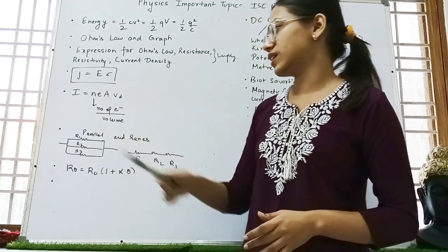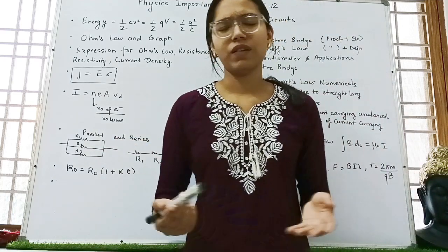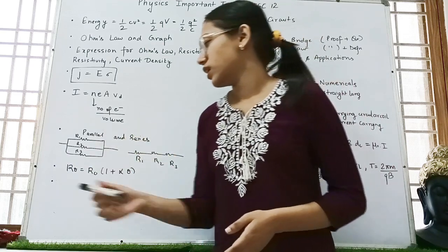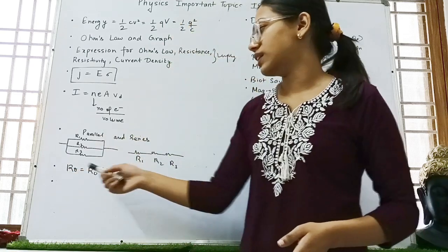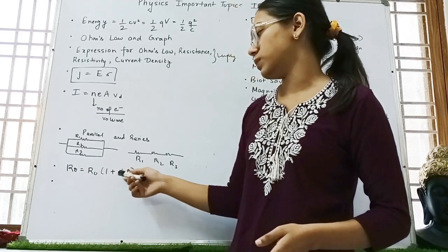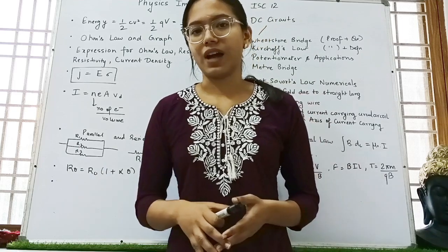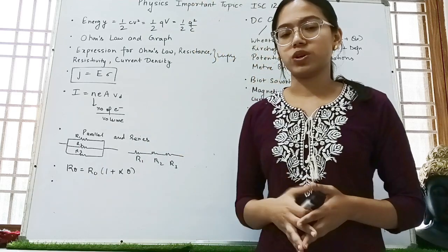Then parallel and series resistance. You have done this in 10th class and I think it is the easiest topic. Then formula R theta is equal to R naught then 1 plus alpha theta. Resistance questions at a certain angle is also asked. At temperature, sorry.